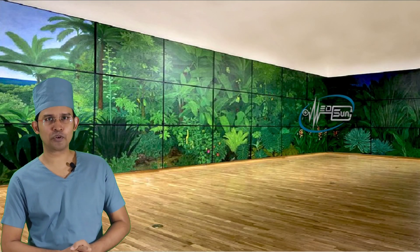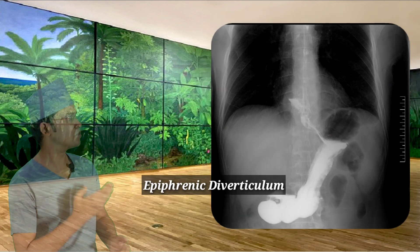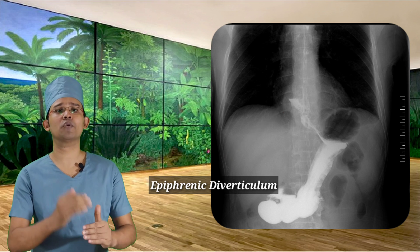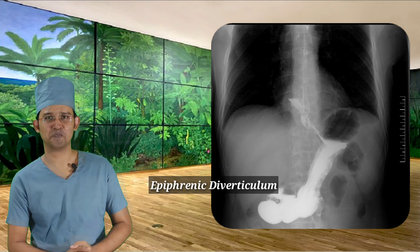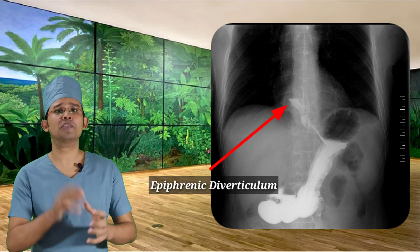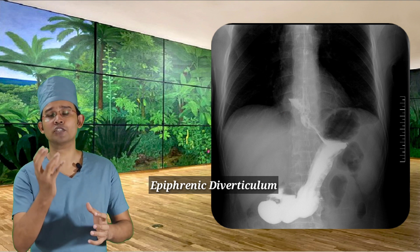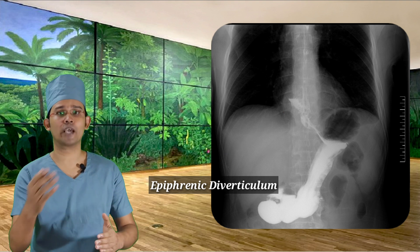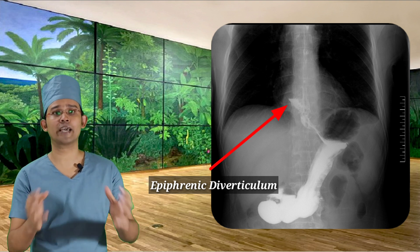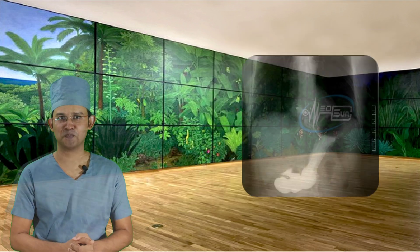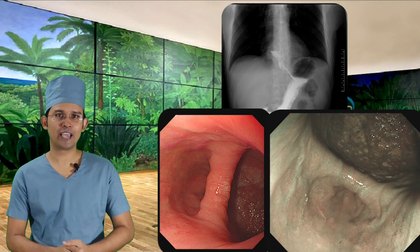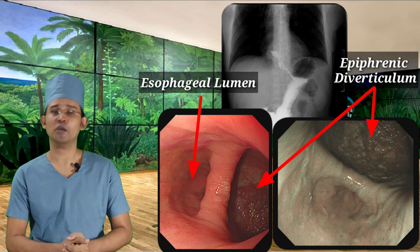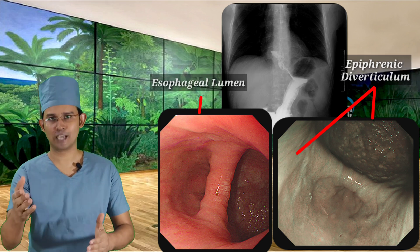In the contrast X-ray, if we look at the picture, we can see a fluid level just above the lower esophageal sphincter, indicating there may be a diverticulum or fluid retained there. In the next approach — upper GI endoscopy — we confirmed the diagnosis of esophageal diverticulum, which we call an epiphrenic diverticulum.